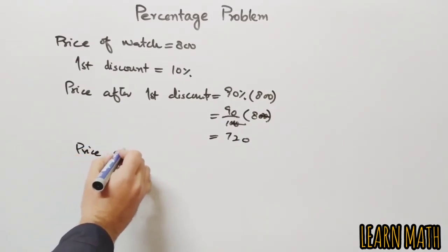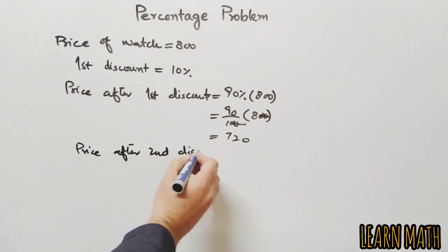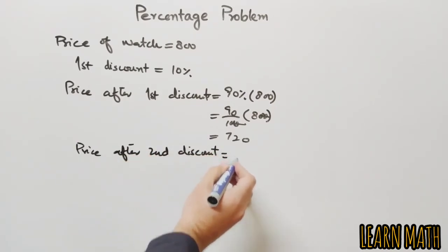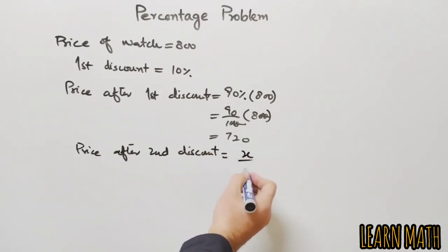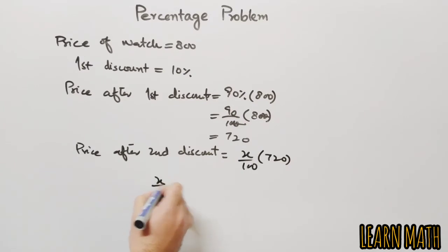Now the price after second discount—we don't know the second discount, so the price after second discount equals x% of 720. And according to the question, after the second discount, the price is equal to 612.